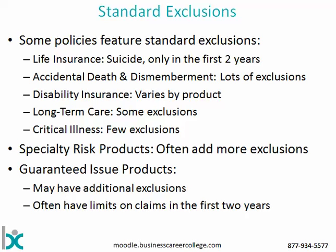Now with other kinds of policies we'll find more exclusions, and really to know the exact set of exclusions that would apply you would have to actually read the policy document. Accidental death and dismemberment policies feature a broad set of exclusions — tons of stuff is excluded. With disability insurance, the more expensive products have very few exclusions, but as you get into more affordable products more stuff will be excluded. Long-term care varies, but typically you don't find a whole lot excluded — though self-inflicted and drug and alcohol related items often are. Critical illness insurance doesn't tend to have a lot of exclusions, though self-inflicted might be, and sometimes it has exclusions added at underwriting.